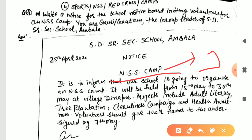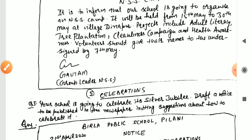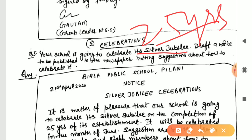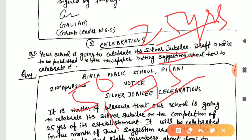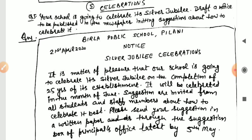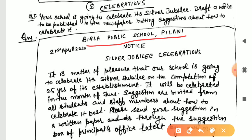The next type is related to celebrations — when your school is going to celebrate something. Here is a question: your school is going to celebrate its Silver Jubilee. Silver Jubilee is at 25 years; Golden Jubilee at 50; Platinum at 75; Diamond at 100. Write a notice to be published in a newspaper inviting suggestions about how to celebrate it. The school name is given as something like Builder's Public School.